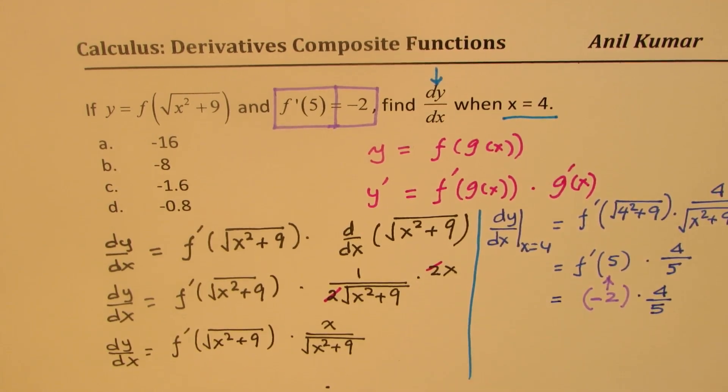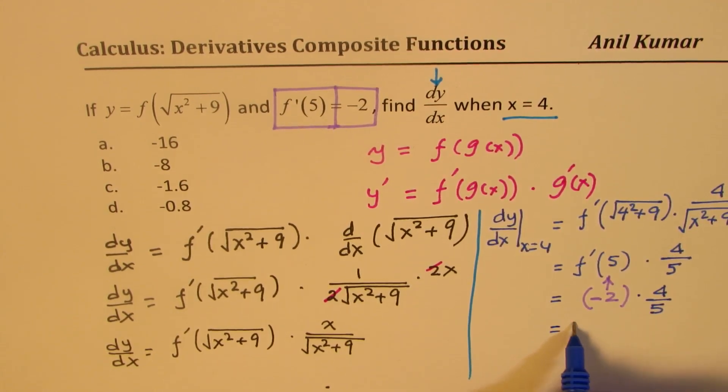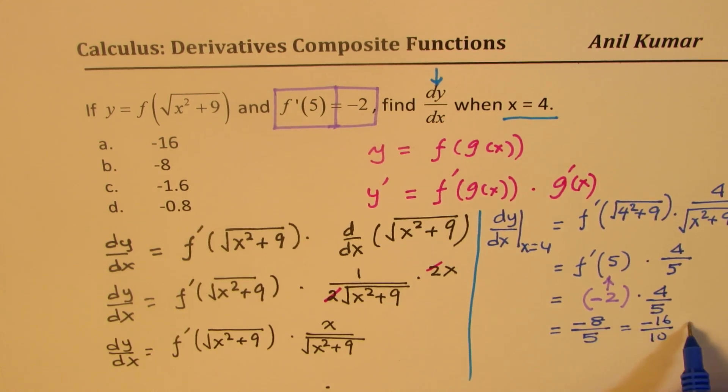So that gives you minus 8 over 5, which is minus 16 over 10. You can multiply by 2 or minus 1.6, correct?